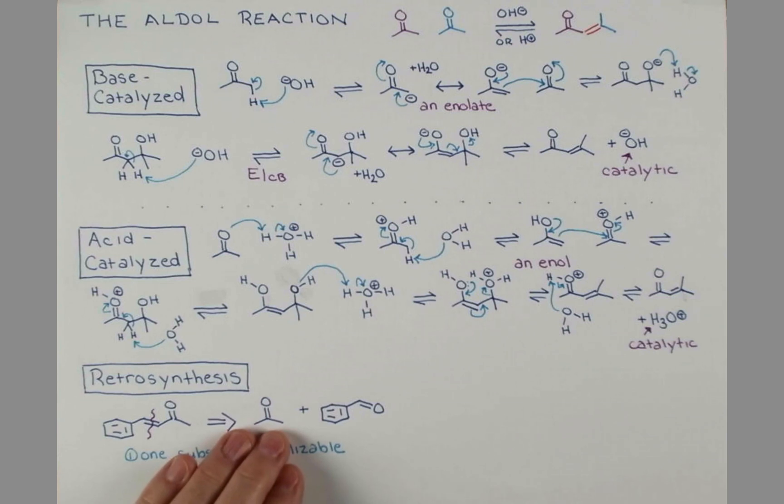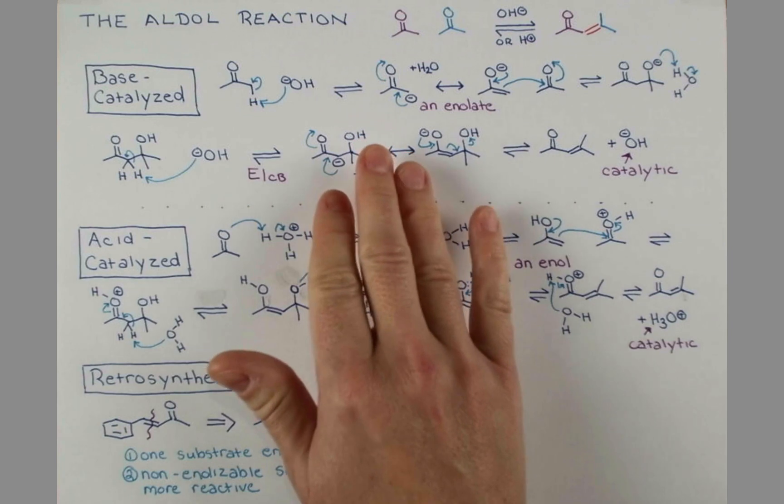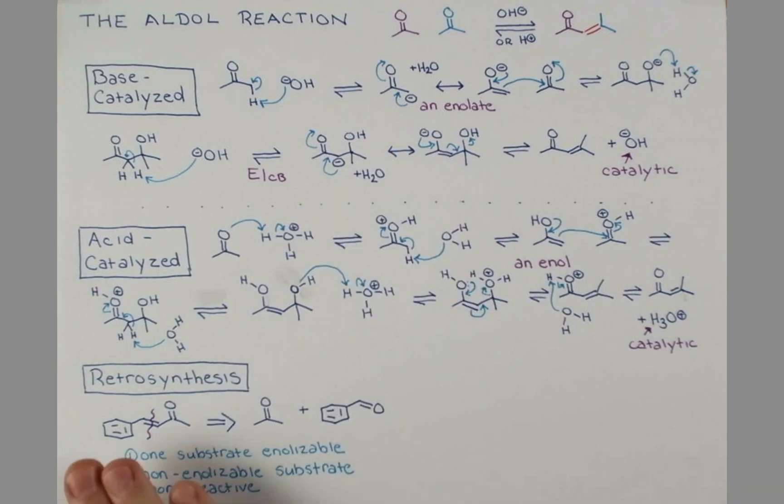We just saw up here how acetone can react with itself. If this is the more reactive partner in the reaction, it'll just react with itself and not do the crossed aldol with the other substrate. However, this is a ketone and this is an aldehyde. Aldehydes are more reactive due to both steric and electronic factors. So to perform this crossed aldol, we could mix these two together with a drop of base or a drop of acid. And this reaction will proceed to produce this product.